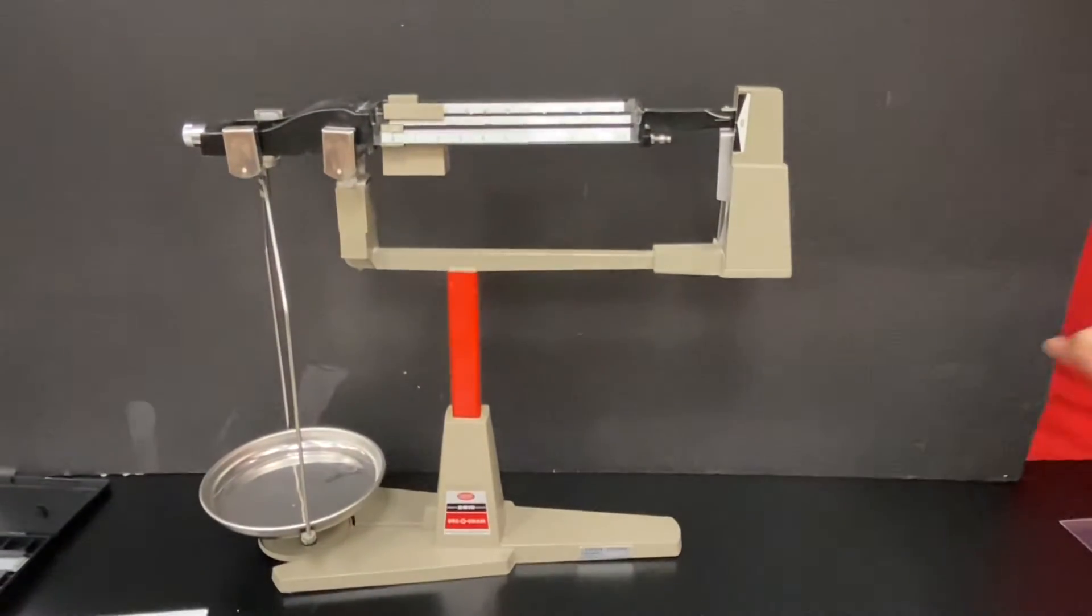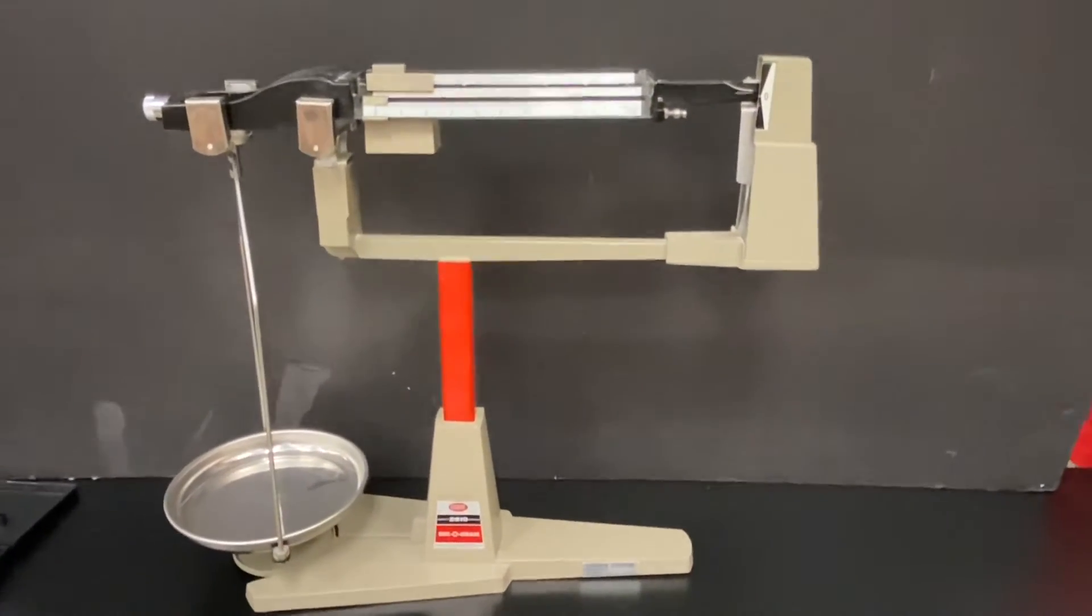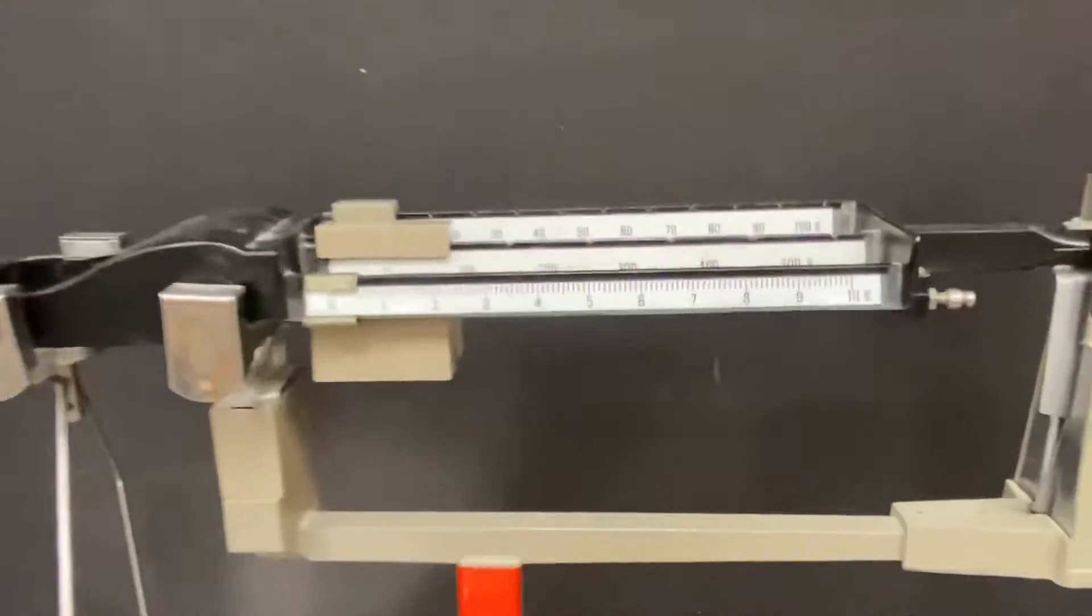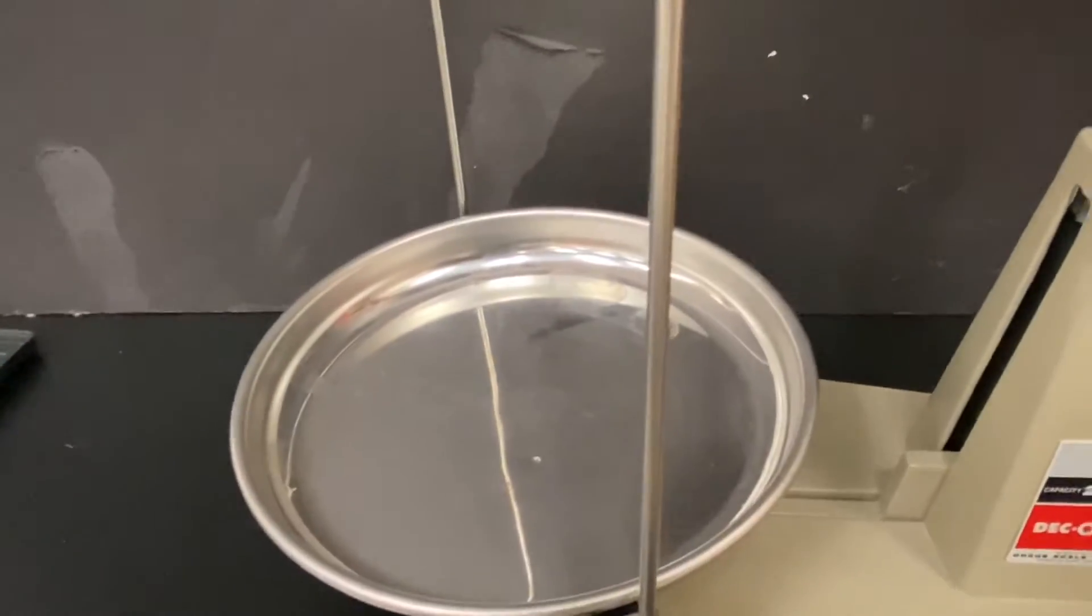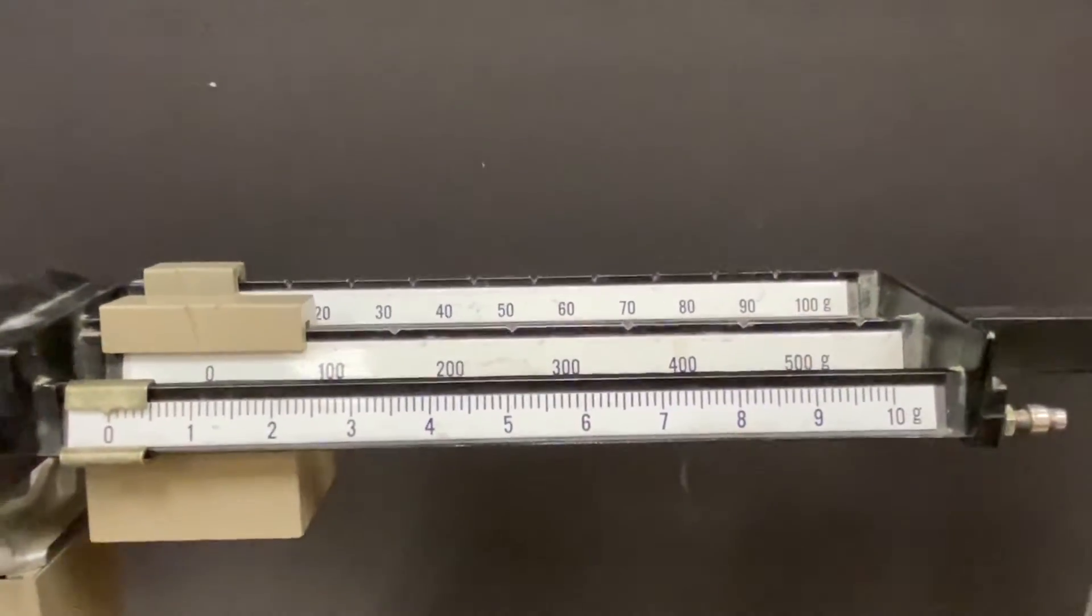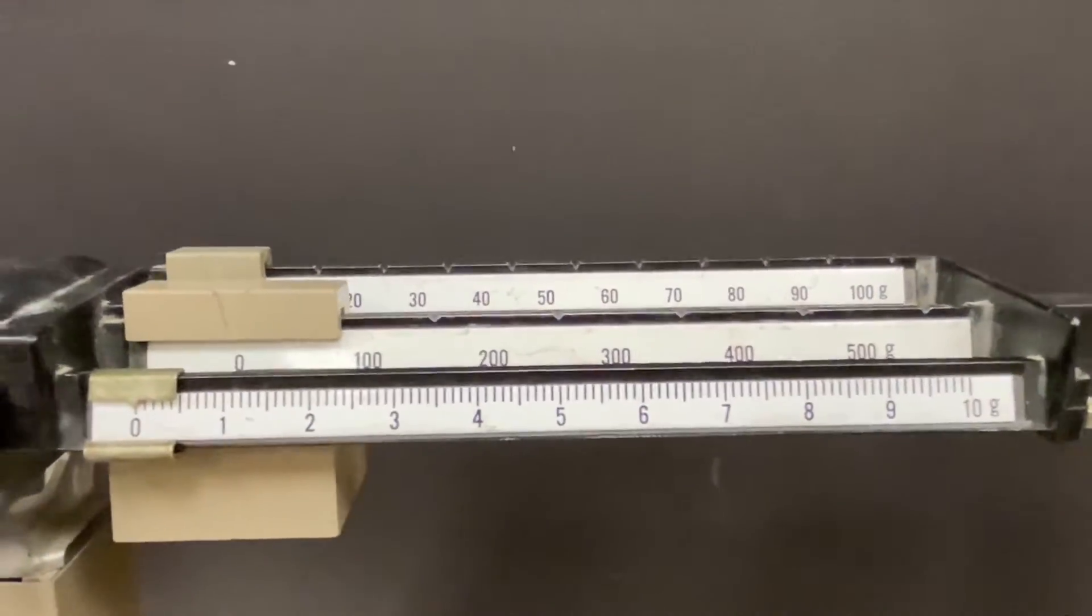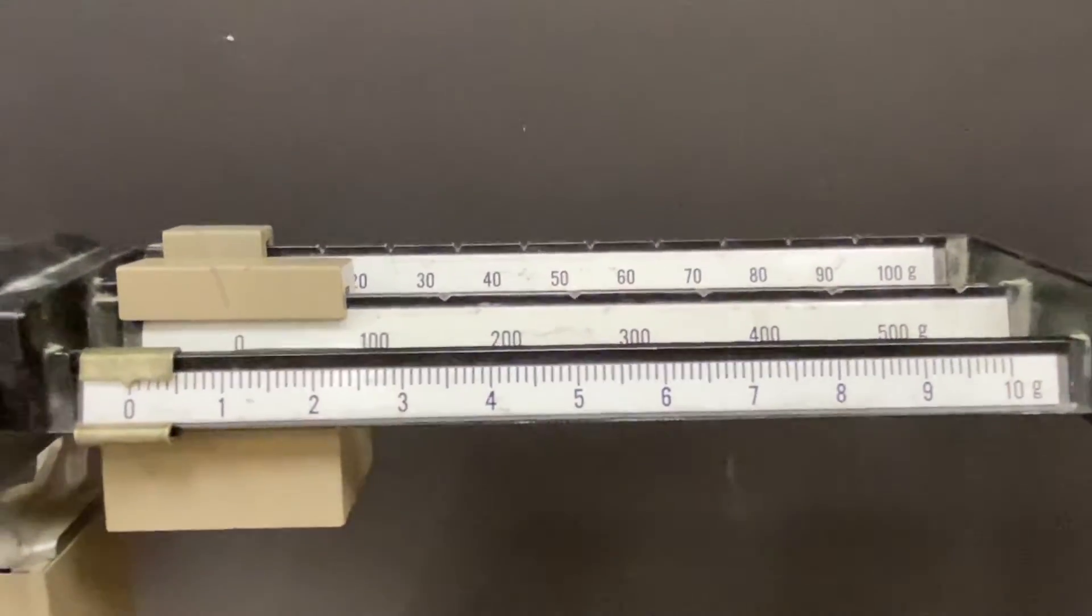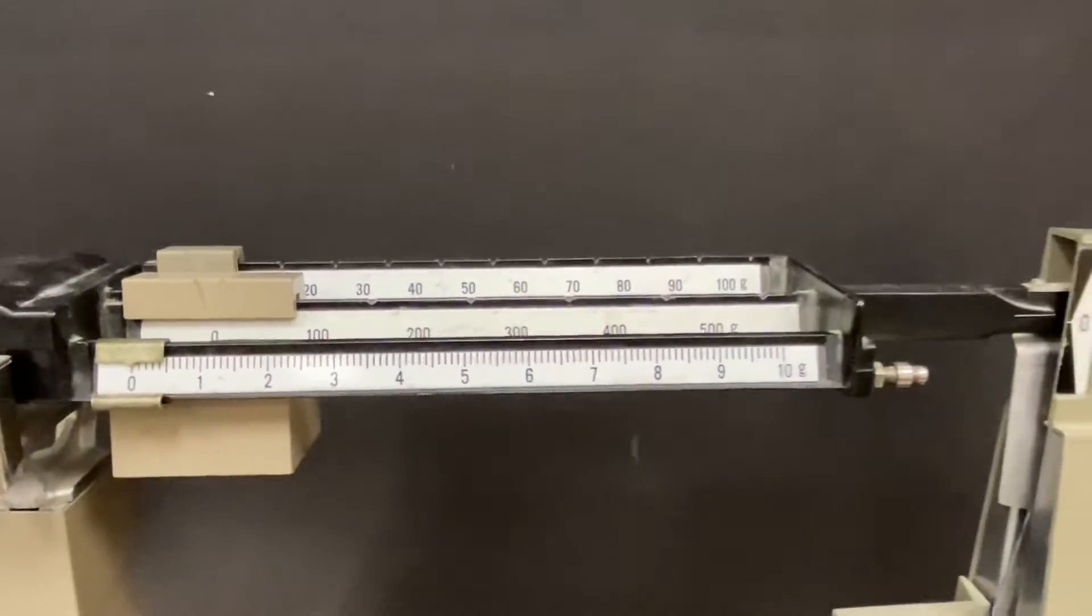Here we have an old school mass scale, mass not weight, that measures a certain amount of grams that are placed on this platter here. So it goes over just a little above 500 grams and we have different units. We have the hundreds, the tens and the ones place of units for grams here.